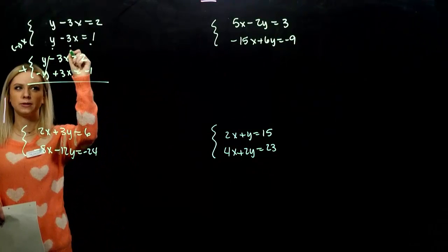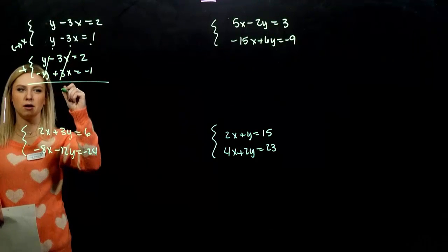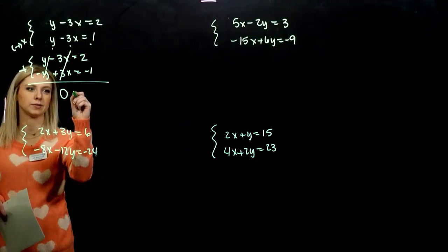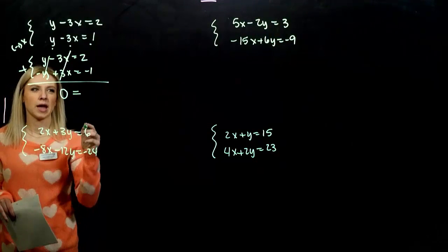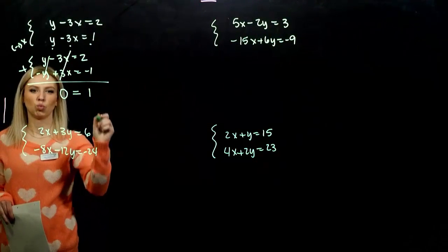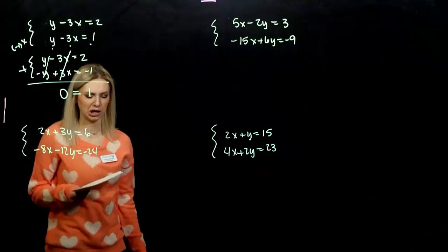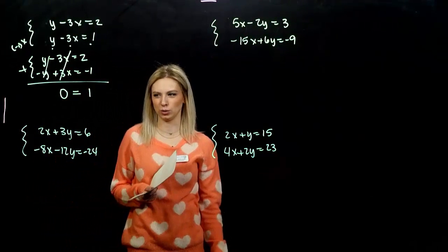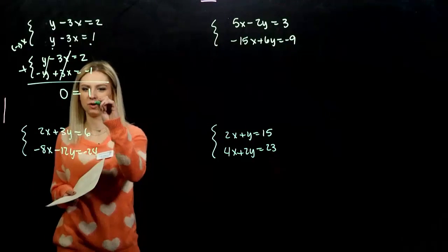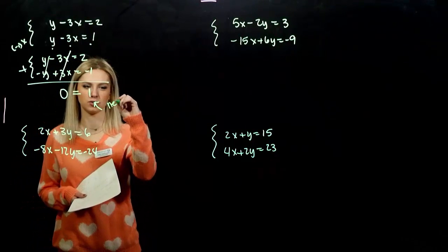What also happens? The x's are going to be gone. So, I have zero on the left, and what do I have on the right? One. Can I ever make zero be equal to one? No. So, we came down to a statement that's never true.